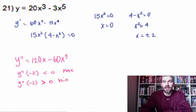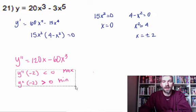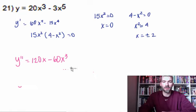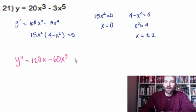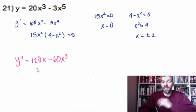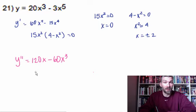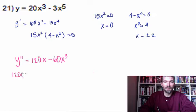So all we're going to do is substitute these critical values in and see what's going on. If we put zero in, we get zero — that doesn't help us since we need the result to be greater than or less than zero. So let's look at 120 times negative 2 minus 60 times negative 2 cubed.